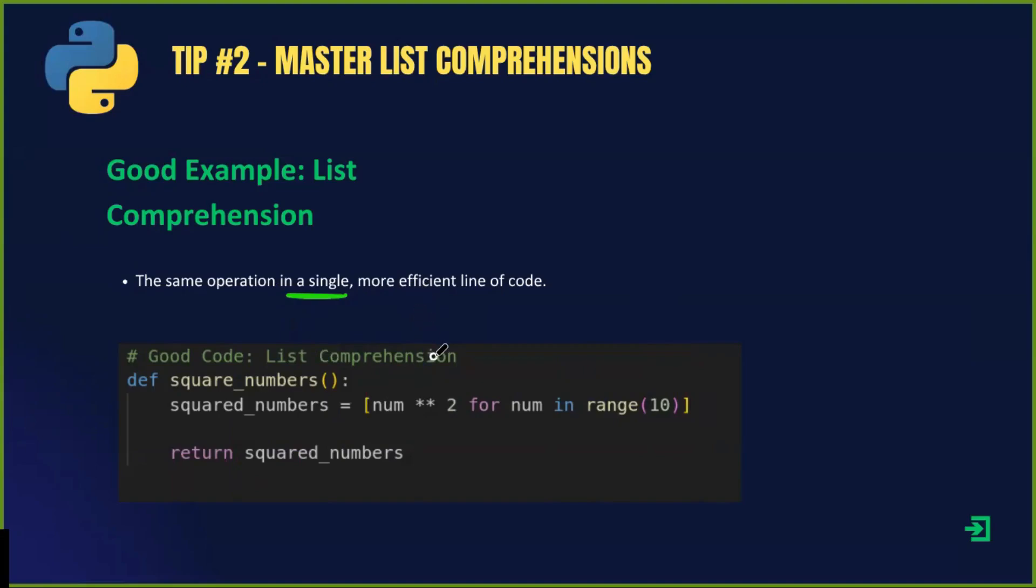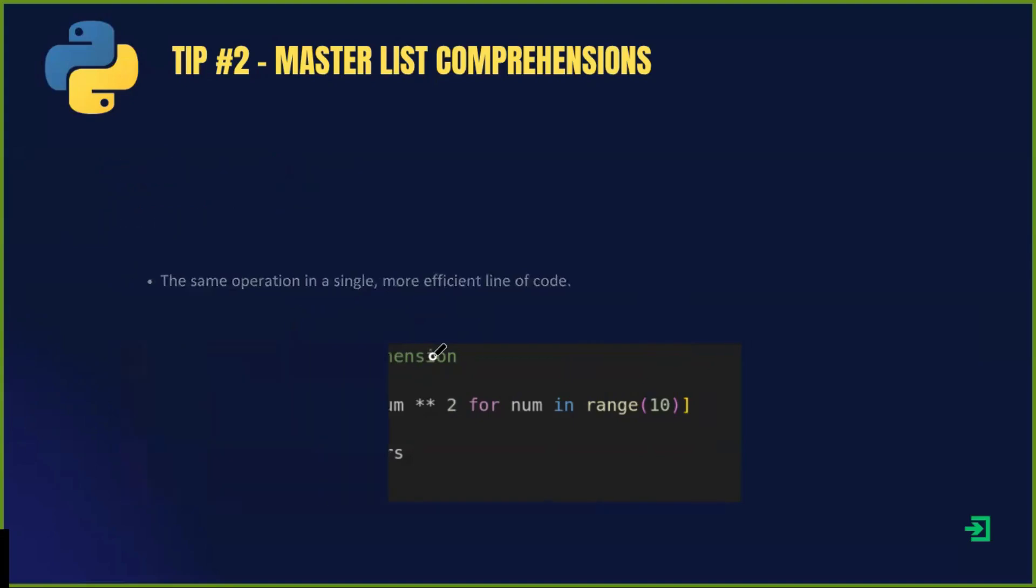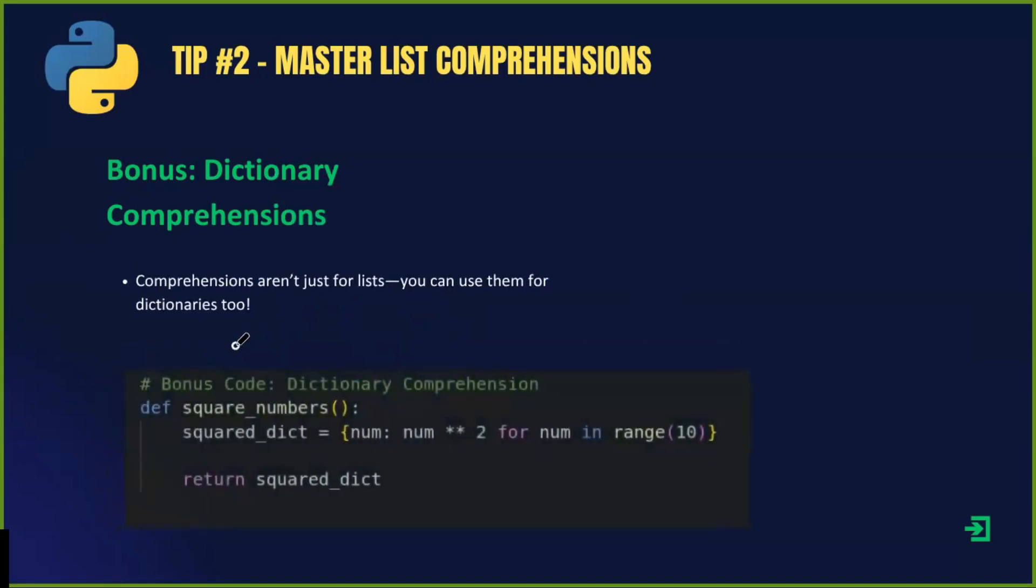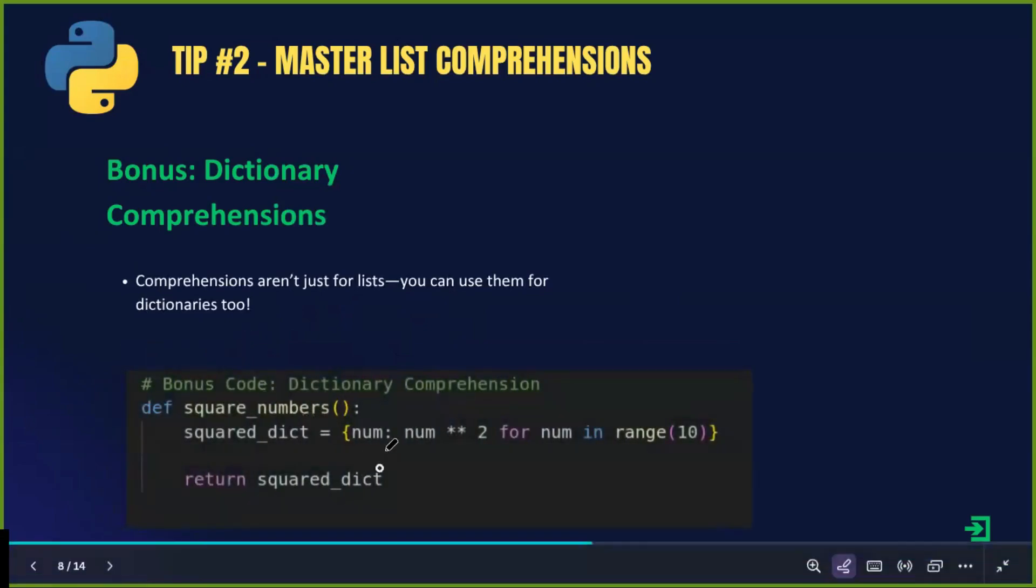Let's explore another powerful comprehension technique. List comprehensions are not just for lists. You can also use them to create dictionaries efficiently. Here is an example. Now, each key value pair represents a number and its square. This is a great way to create mappings in Python efficiently.